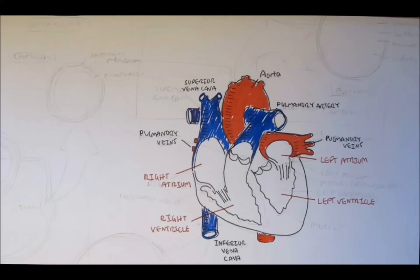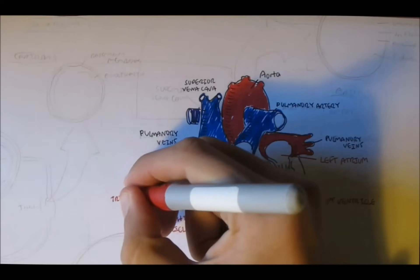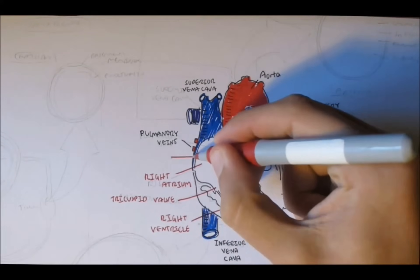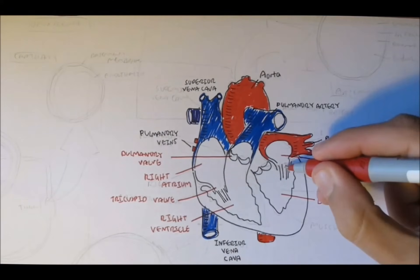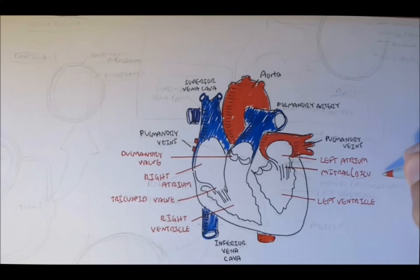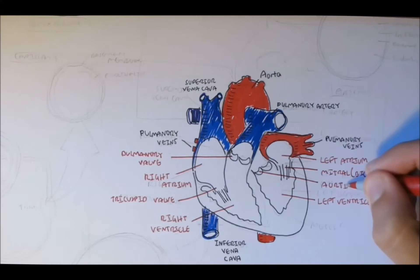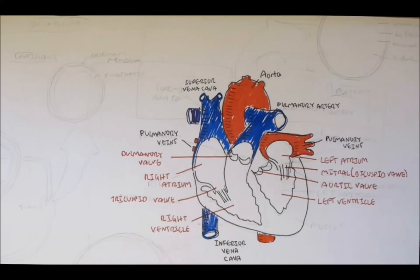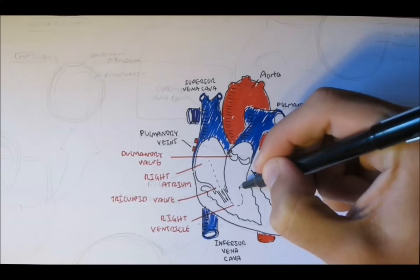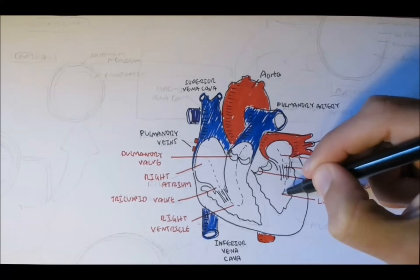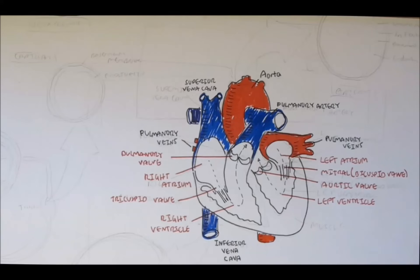To separate the atrium and ventricle and prevent backflow, we have valves. The tricuspid valve separates the right atrium and the right ventricle — tricuspid meaning three cusps. The pulmonary valve separates the pulmonary artery from the right ventricle. Then we have the mitral or bicuspid valve separating the left atrium and the left ventricle — bicuspid meaning two cusps. Then the aortic valve separating the aorta and the left ventricle. These valves are very important to prevent backflow and to keep pressure levels in sync.